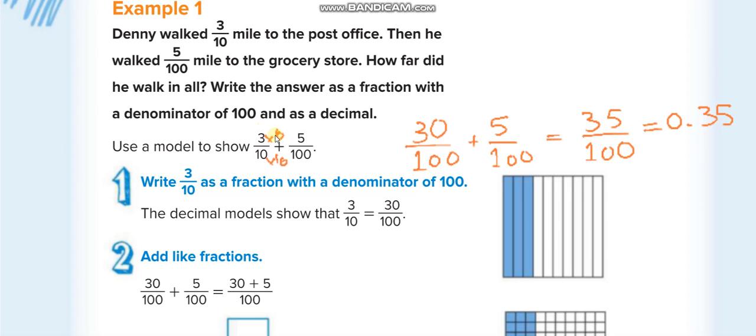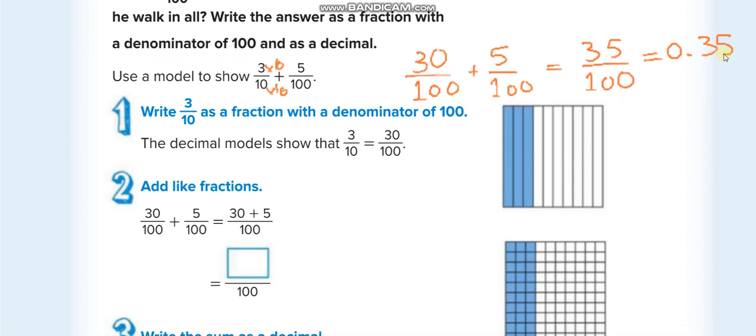So we will multiply this first fraction by 10 up and 10 down. 3 times 10 is 30, and 10 times 10 is 100. Now 30 over 100 plus the second fraction 5 over 100 equals 35 over 100, and its decimal is 0.35. The word form is 35 hundredths - here it is 35 over 100.